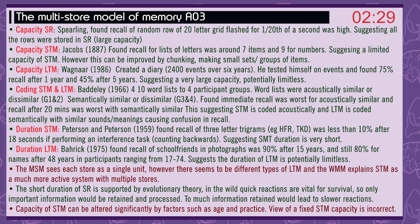Duration of short-term memory: Peterson and Peterson in 1959 found recall of three-letter trigrams, like HFR or TKD, was less than 10% after 18 seconds if performing an interference task of counting backwards, suggesting short-term memory duration is very short. Duration of long-term memory: Bahrick in 1975 found recall of school friends and photographs was 90% after 15 years, and still 80% for names after 48 years, in participants ranging from 17 to 74, suggesting the duration of long-term memory is potentially limitless.